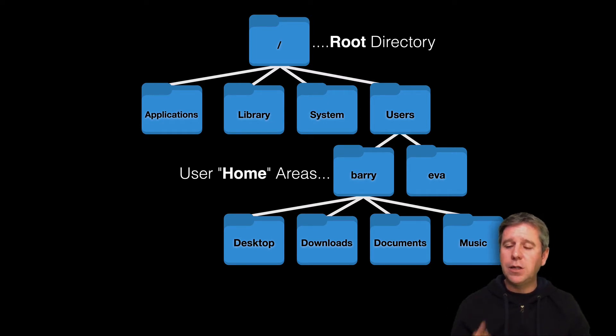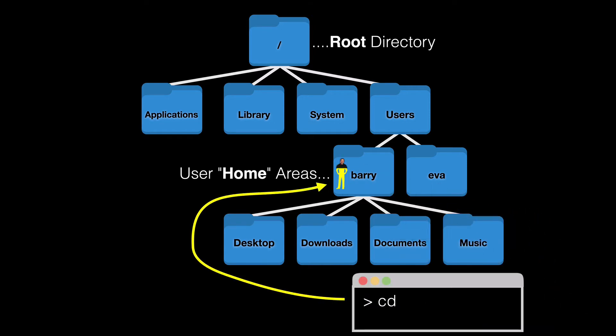When you log in or just type cd at the terminal, you'll end up in your home area. For me, when I type cd, I end up at this location — I can type pwd and it prints out where I am from the root of the UNIX file system: /users/barry. If Eva logged into this computer, she would end up in her specific home area, /users/eva. Yours will reflect whatever your login name is for the particular computer you're using.